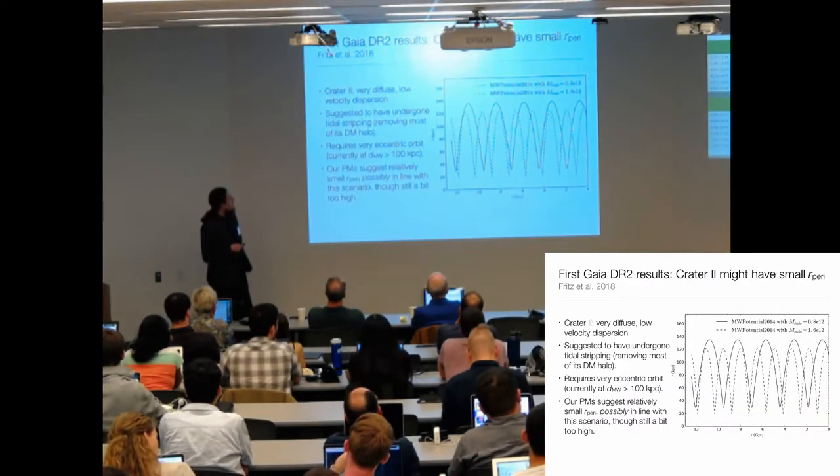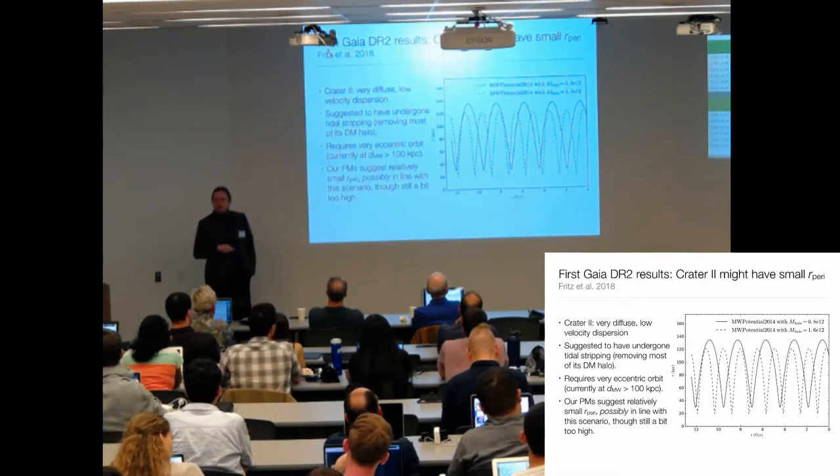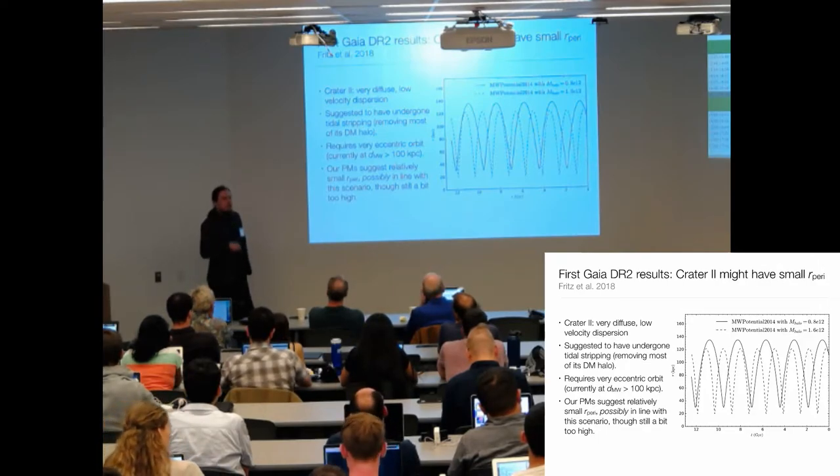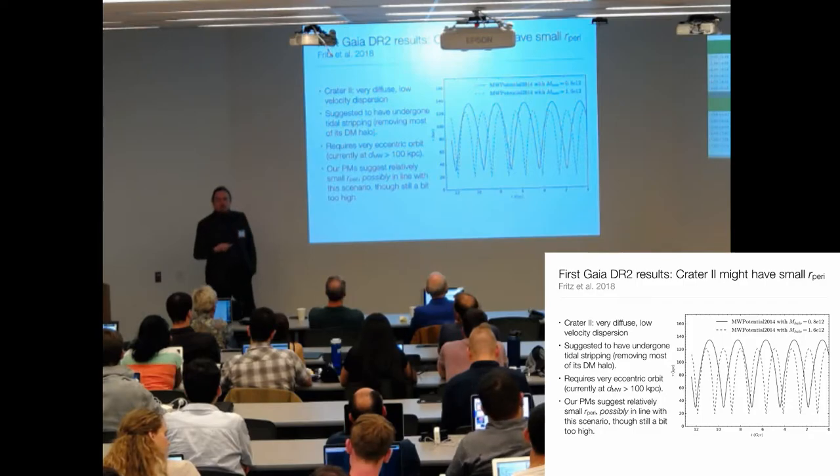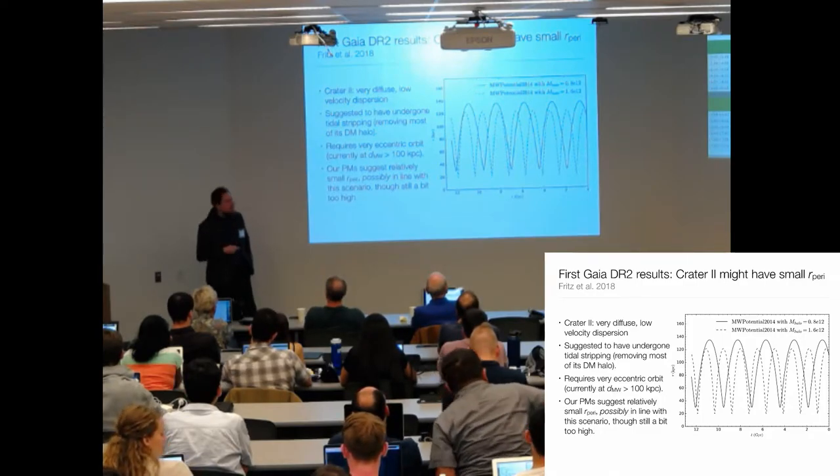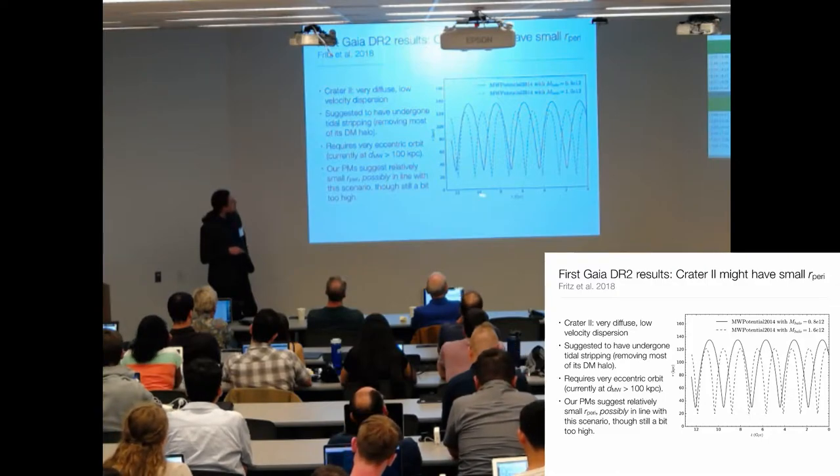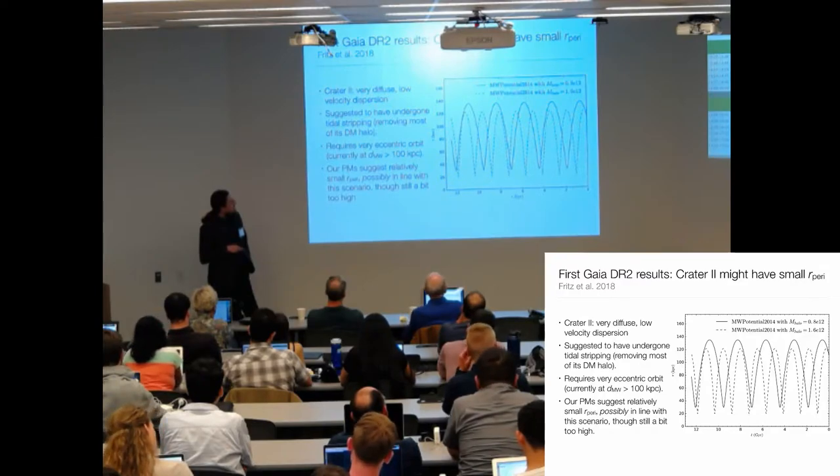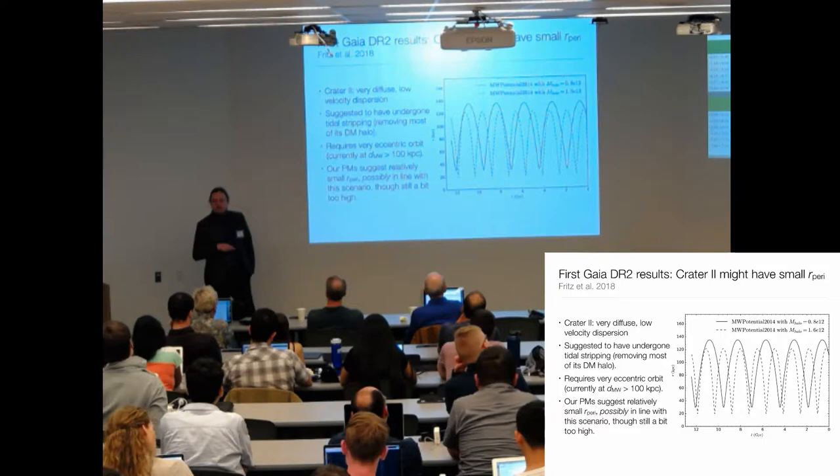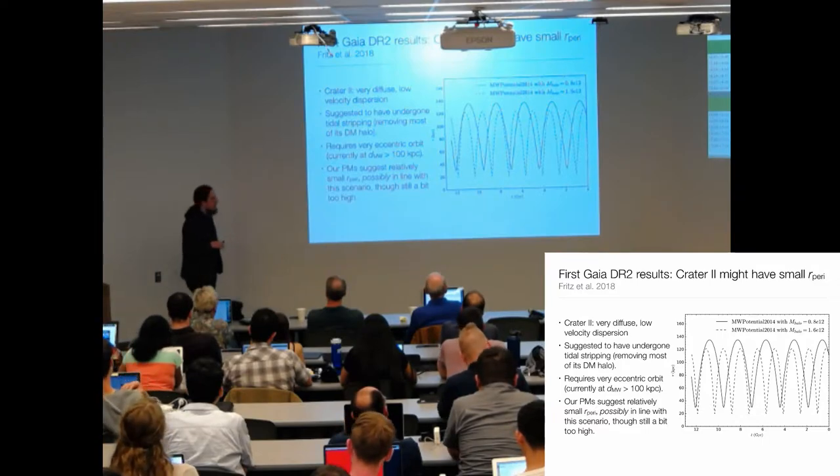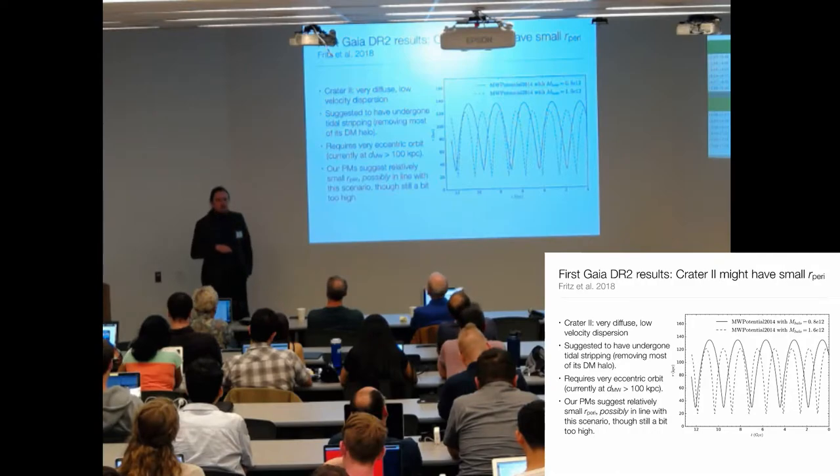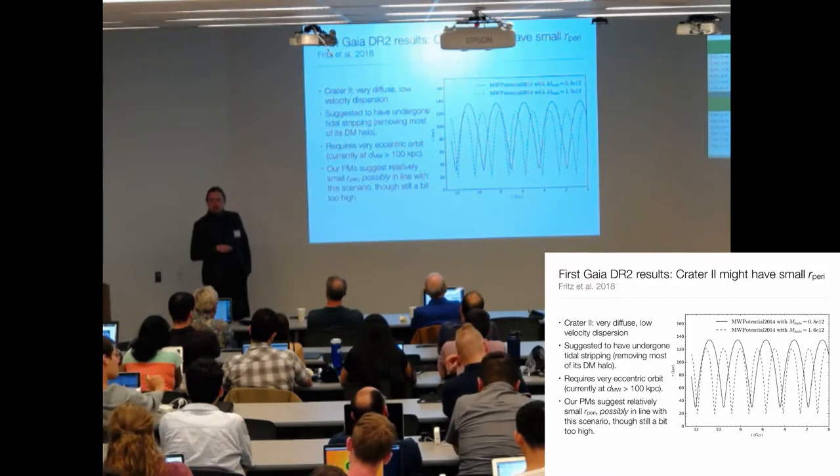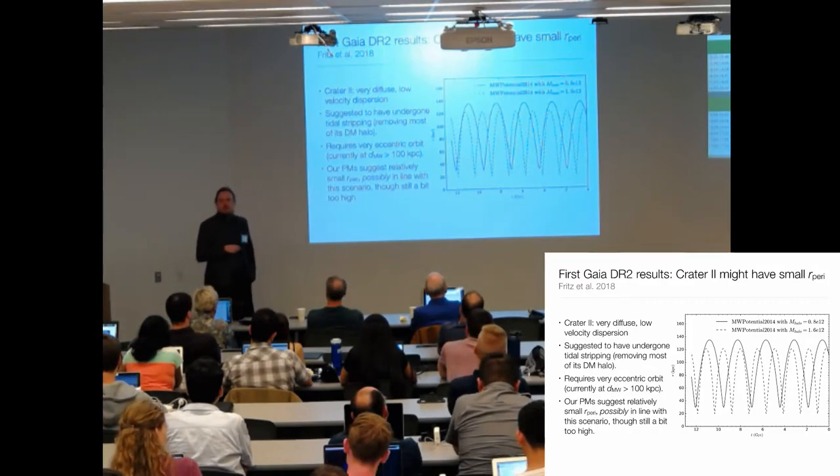We also look at Crater 2, which is a very diffuse satellite galaxy around the Milky Way with an extremely low velocity dispersion. It was suggested that it might be formed by stripping its dark matter halo, which would require a very close passage to the Milky Way. What we find is an orbit plot of time and distance from the Milky Way - especially for the heavy Milky Way potential we get pericenters of down to 20 kiloparsecs. This is promising and getting us in a scenario to explain the morphology and the internal kinematics of Crater 2.